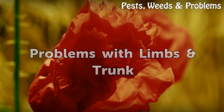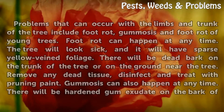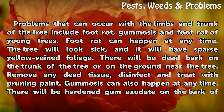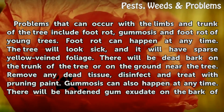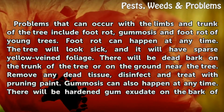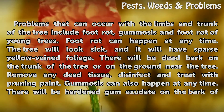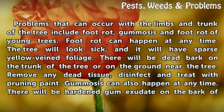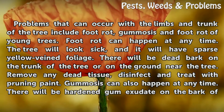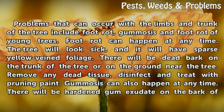Problems with Limbs and Trunk. Problems that can occur with the limbs and trunk of the tree include foot rot, gummosis, and foot rot of young trees. Foot rot can happen at any time. The tree will look sick and will have sparse yellow-veined foliage. There will be dead bark on the trunk or on the ground near the tree. Remove any dead tissue, disinfect, and treat with pruning paint.